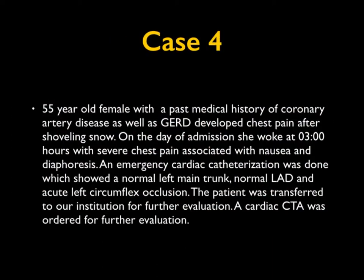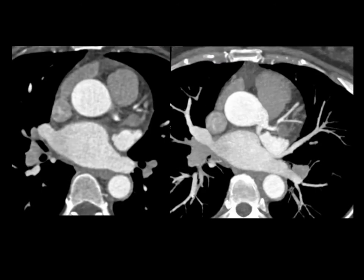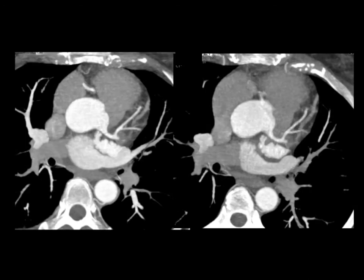Another case. The patient has a past medical history of coronary disease, has GERD, was shoveling snow for the first time, had chest pain, went to the ER, and eventually made it to Hopkins. Emergency cardiac cath was done, which showed left circumflex occlusion. Looking at the CTA images, you see the right coronary, left main coronary, the LAD, and the origin of the circumflex on the second set of images — but you realize the circumflex is occluded just past its origin.